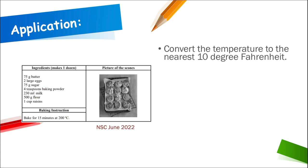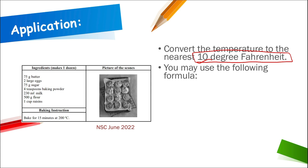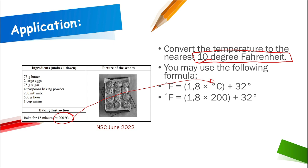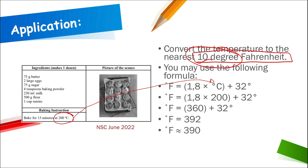Convert the temperature to the nearest 10 degrees Fahrenheit, using the formula: °F = 1.8 × °C + 32. The temperature is 200°C. Remember BODMAS — first calculate 1.8 × 200 = 360, then add 32 = 392°F. Rounded to the nearest 10 degrees, that's 390°F. Remember, you get a rounding mark when they specify rounding.